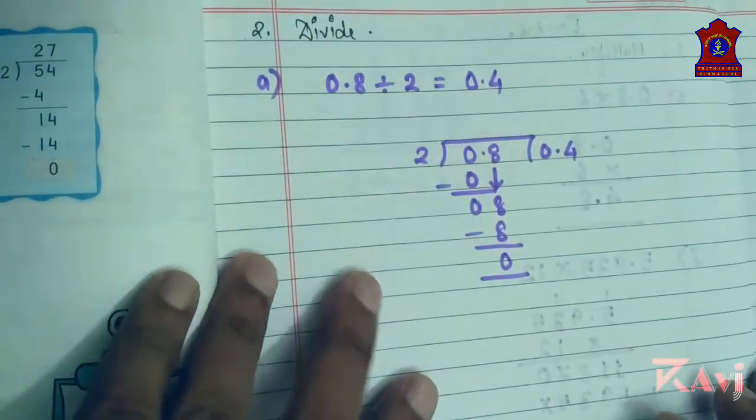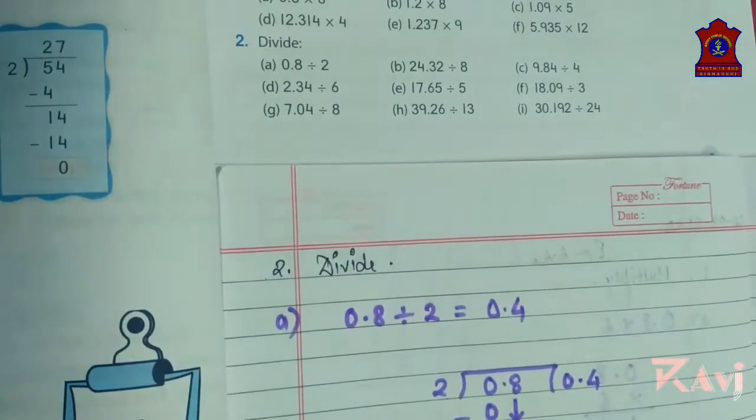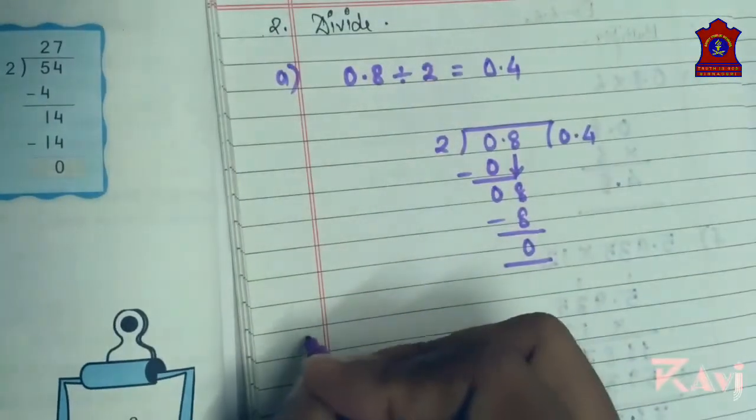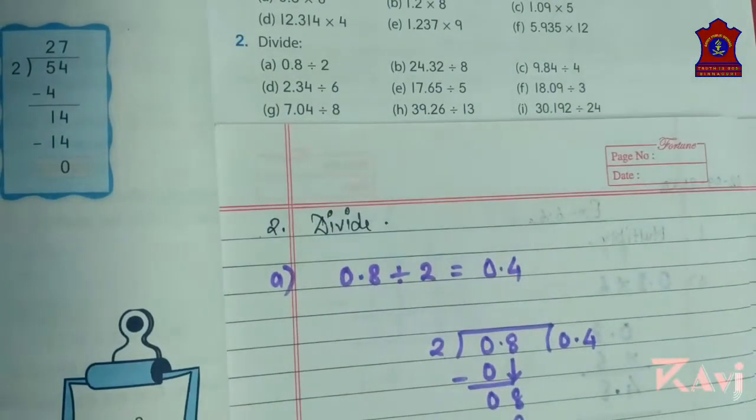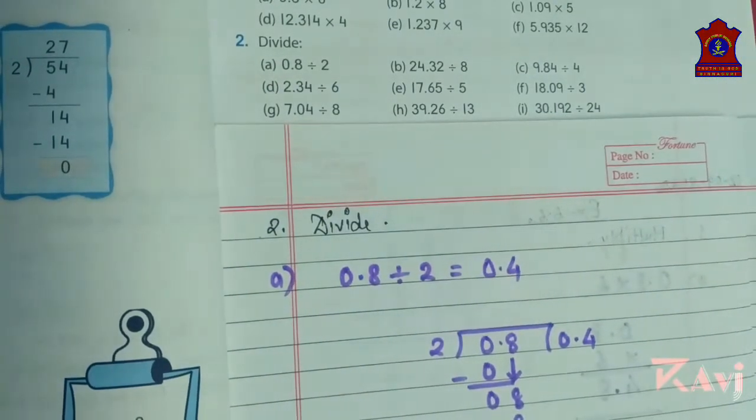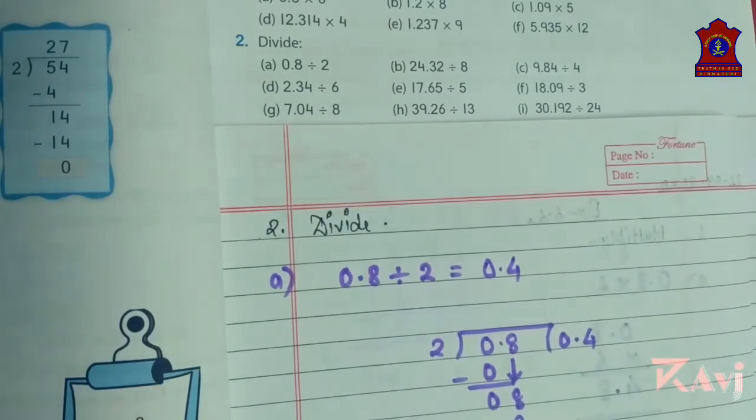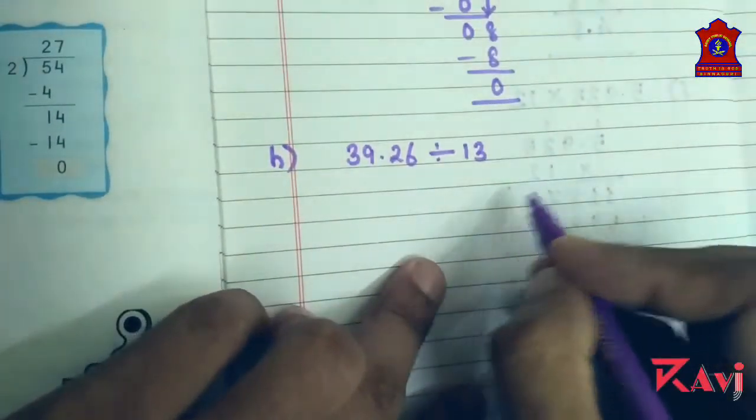Now let's take one more question. I'll take which question number? Question number h. 39.26 divided by 13.